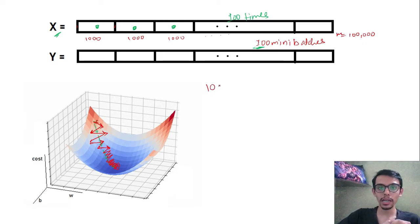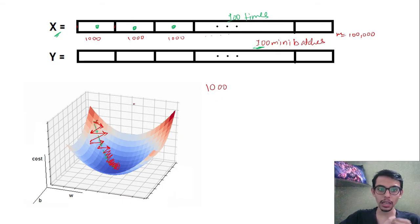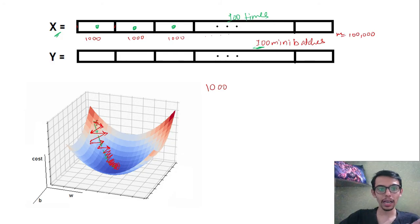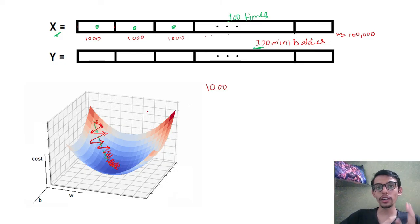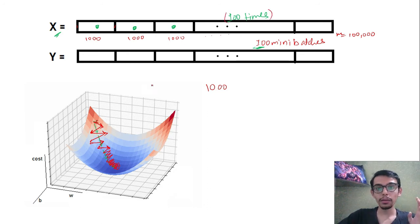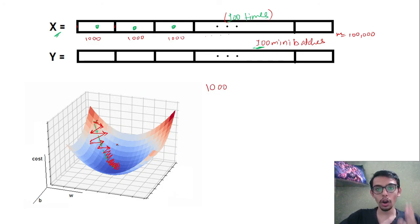Now imagine if our dataset size is not 100,000 but only 1,000. In that case it is pointless to use mini batch gradient descent, because a lot of time will be consumed following this zigzag path instead of the straight path. But if we have a huge dataset, we would have already updated our weights 100 times and made a lot of progress toward the local minimum by the time the model has seen the entire dataset.